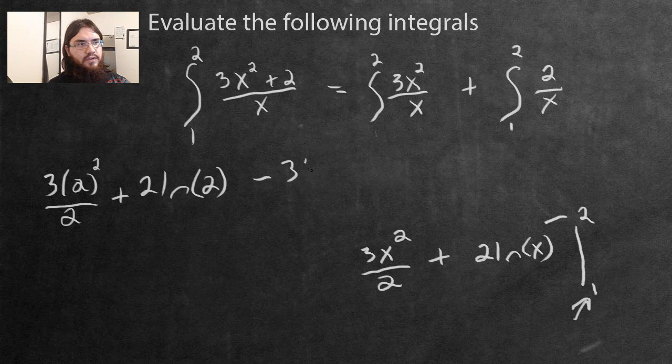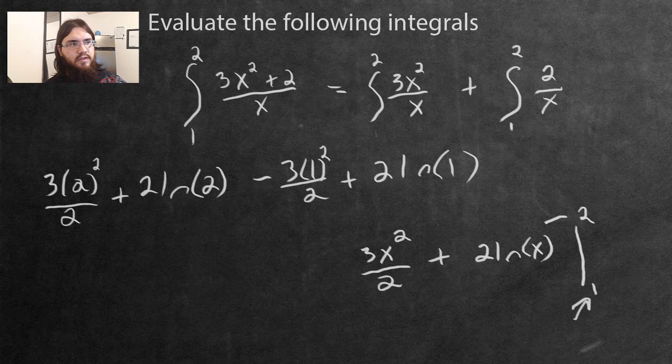We're going to have three times one squared over two, add two ln of one, because we're substituting the one in. So notice we're subtracting everything that we put the two in from where we put the one in, and that's using the fundamental theorem of calculus, one of the parts of it.